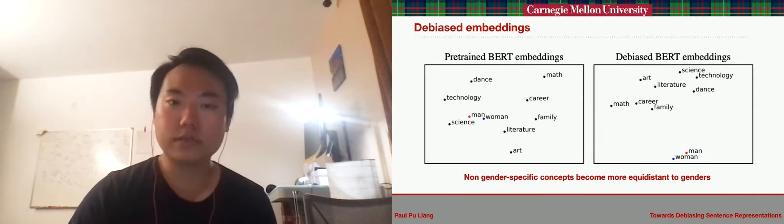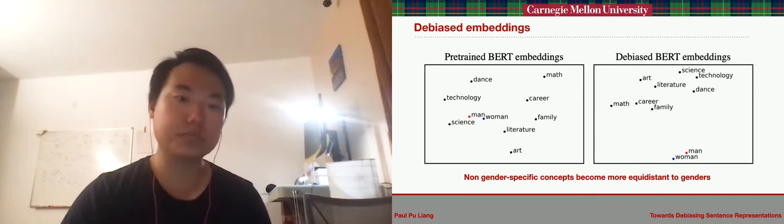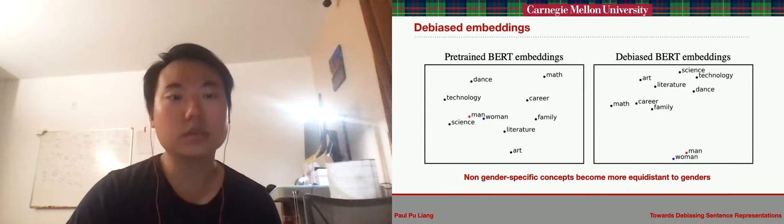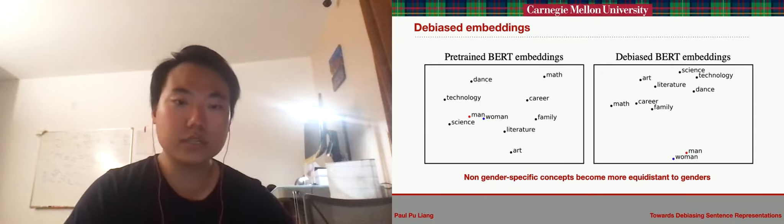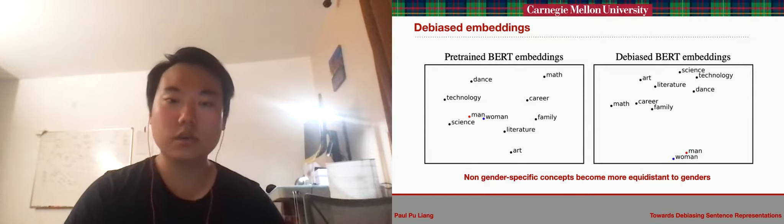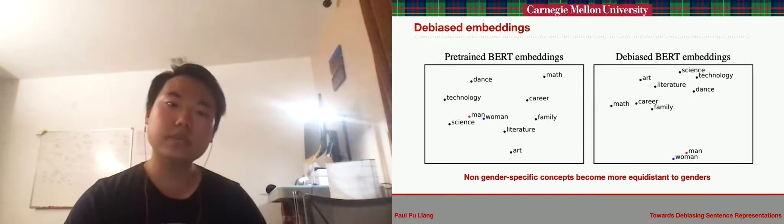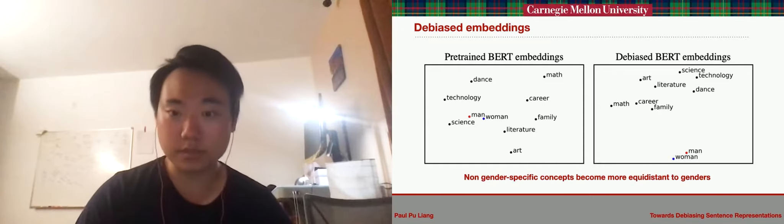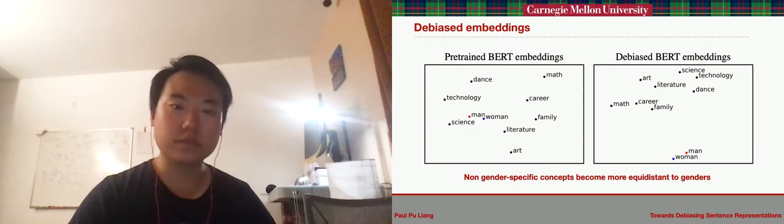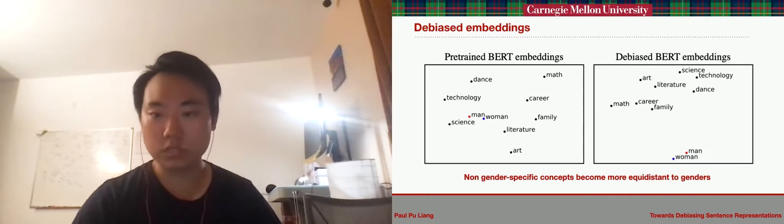As a qualitative analysis of the debiasing process, we visualize how the distances between sentence representations change after the debiasing process is performed. We average the sentence representations of a concept, such as man, woman, science, and art, across their context, which are sentence templates, and we plot the t-SNE embeddings of these points in 2D space. We observe that BERT average representations of science and technology are thought-up close to the man, while literature and art are close to the woman.